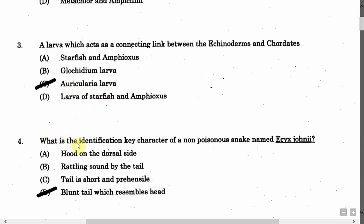The next question is: What is the identification key character of a non-poisonous snake named Eryx johni? Option A: The hood on the dorsal side. Option B: Rattling sound by the tail. Option C: Tail is short and prehensile. Option D: Blunt tail which resembles head. The correct answer is Option D, that is Blunt tail which resembles head.